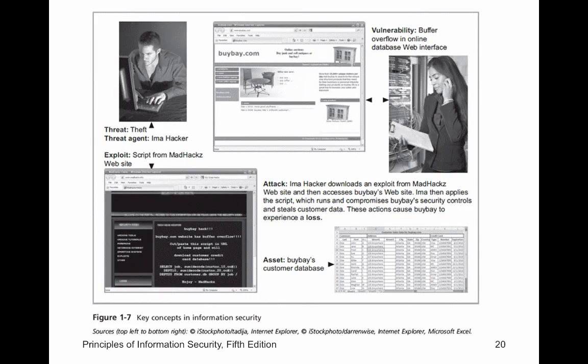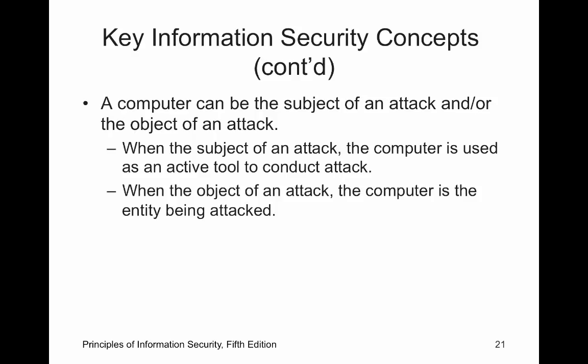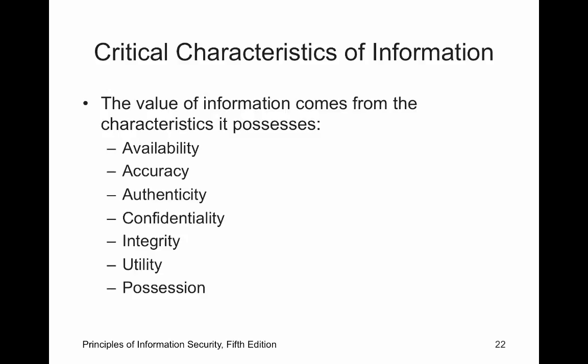Here we have our threat and our agent with all kinds of examples. There's our vulnerability — it could be a buffer overflow. Our asset could be a customer database. An attack could be someone trying to break into it. A computer could be the subject of an attack or the object — maybe I'm using the computer to break into the network, or maybe I'm breaking into the network to get to the computer. That's the difference.